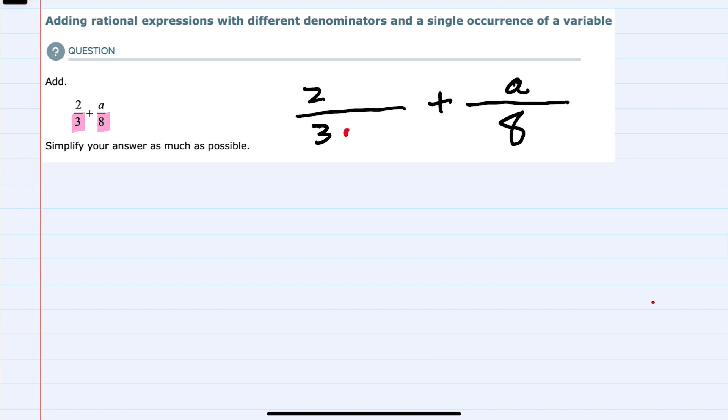To do so on the left hand side I would need to multiply the denominator by 8 and I can do that as long as I multiply the numerator by 8 as well. So I've really multiplied by 1 which is 8 over 8. That would give me a denominator of 24.